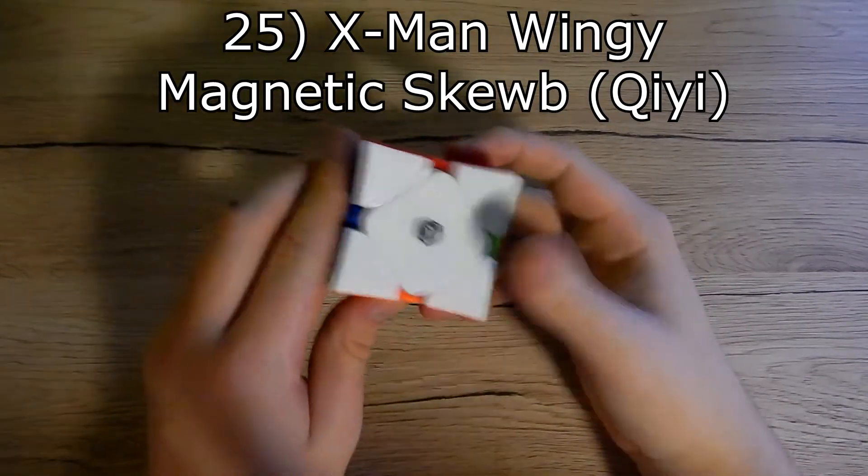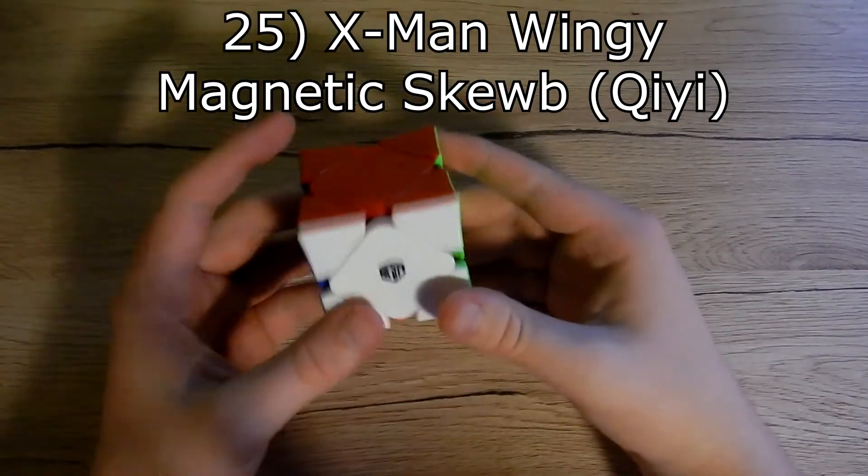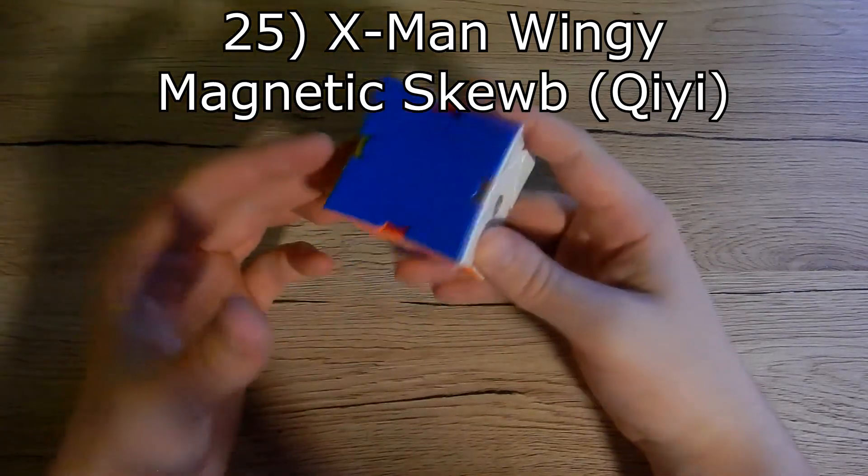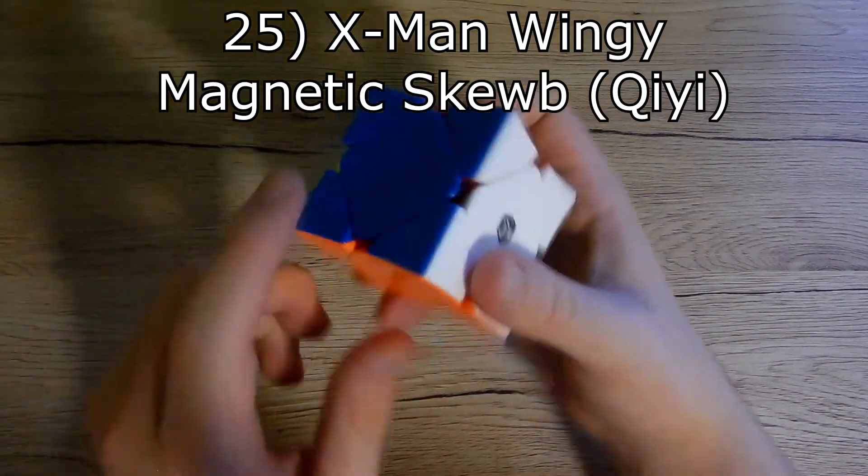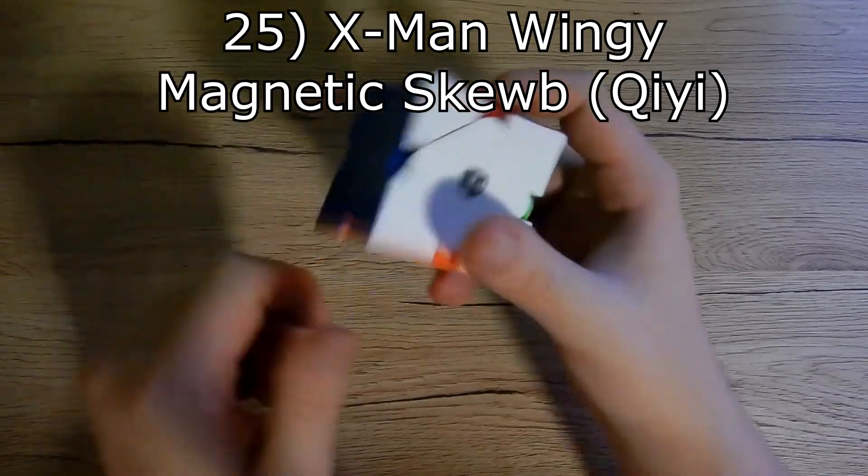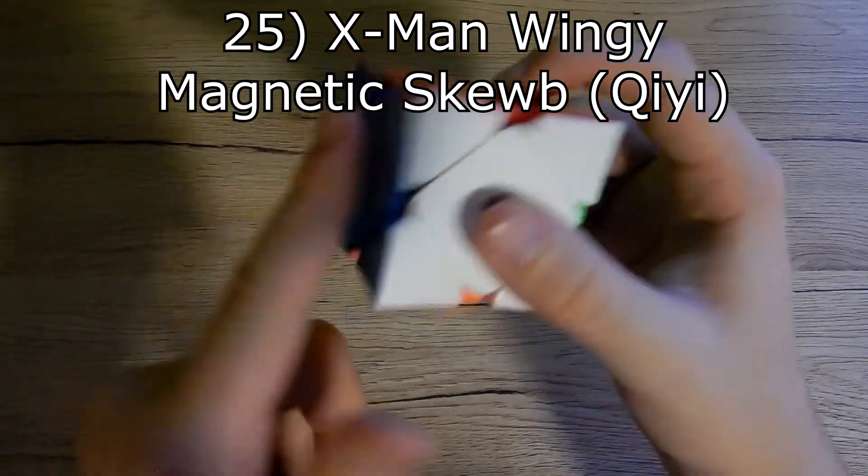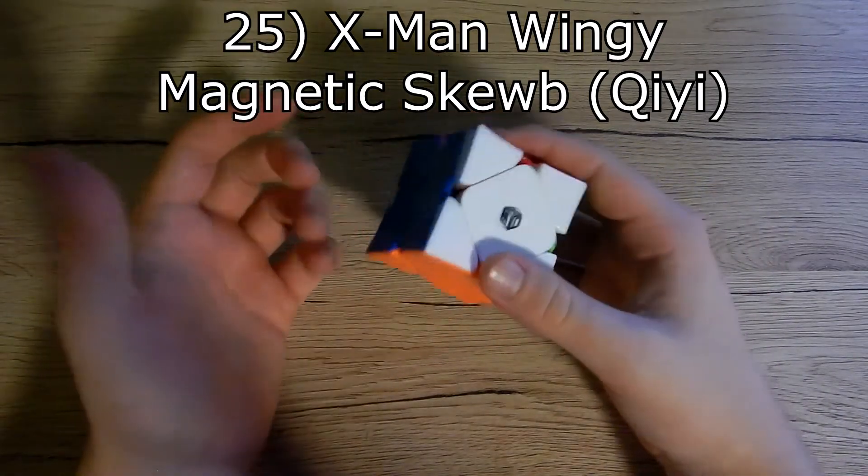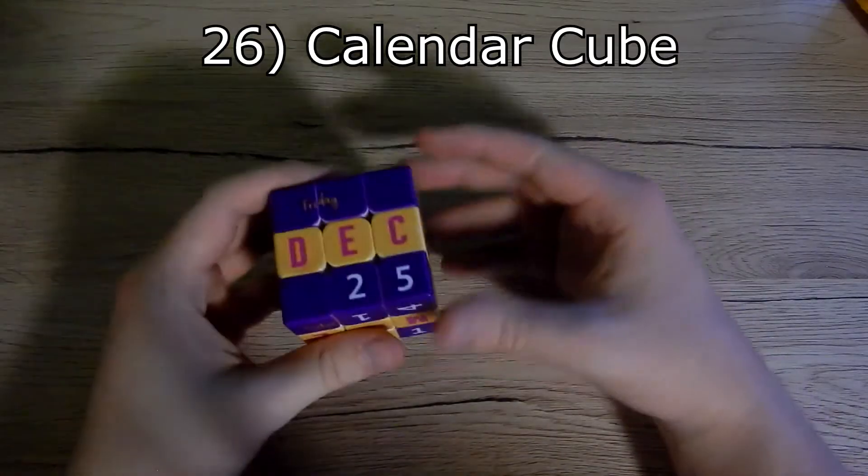This one is Qiyi X-Men wingy magnetic skewb. I think it's cool and I like it because it has the wings. It has magnets and it's very great. Next we have sticker mods.